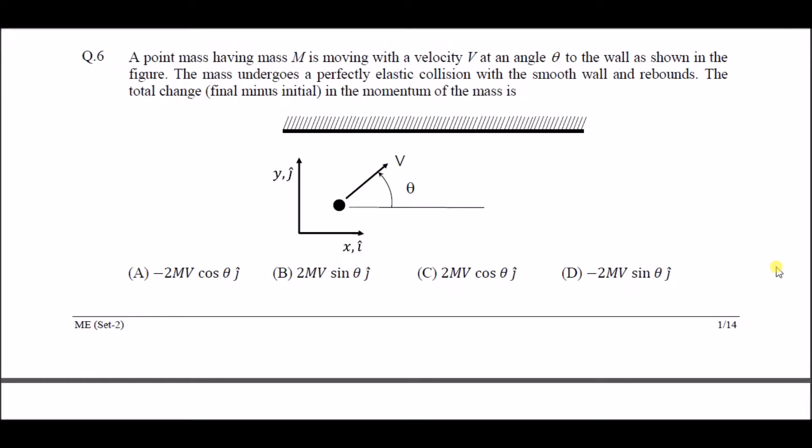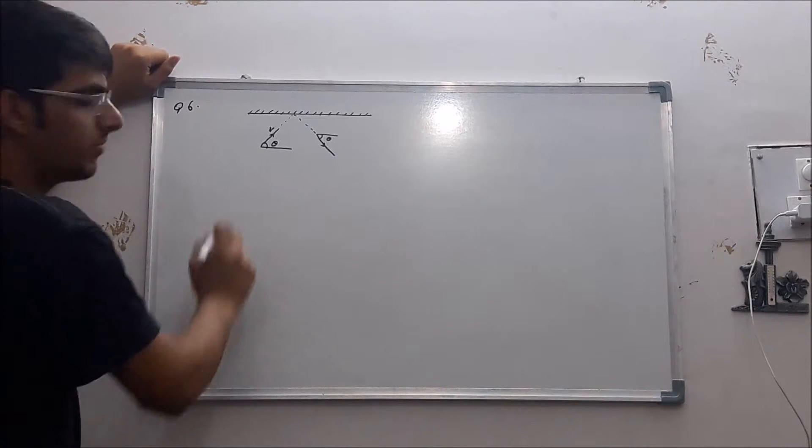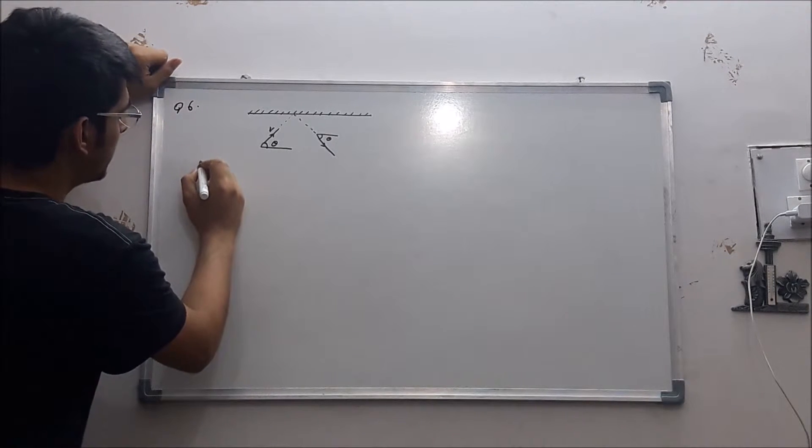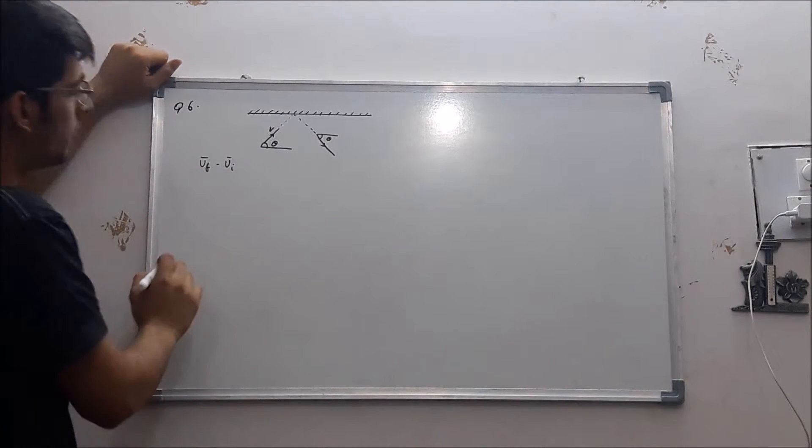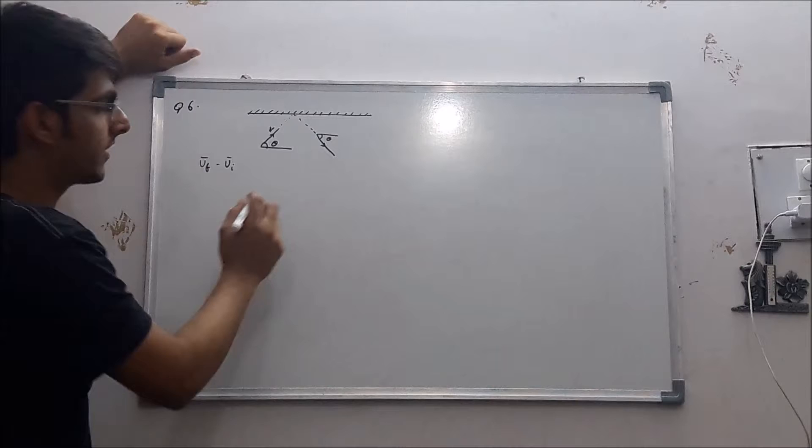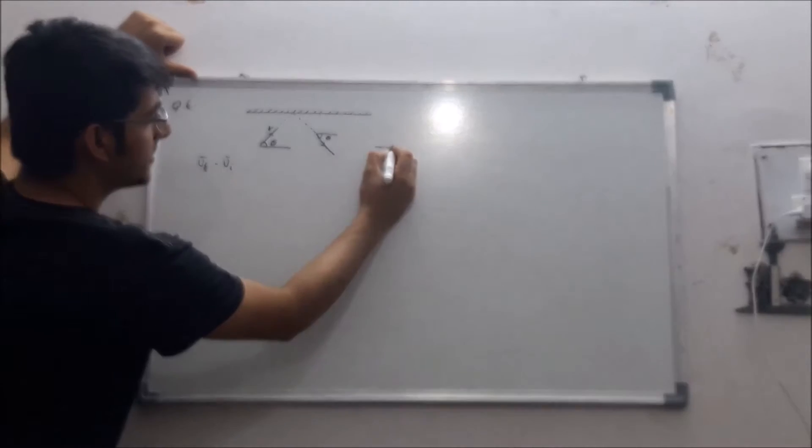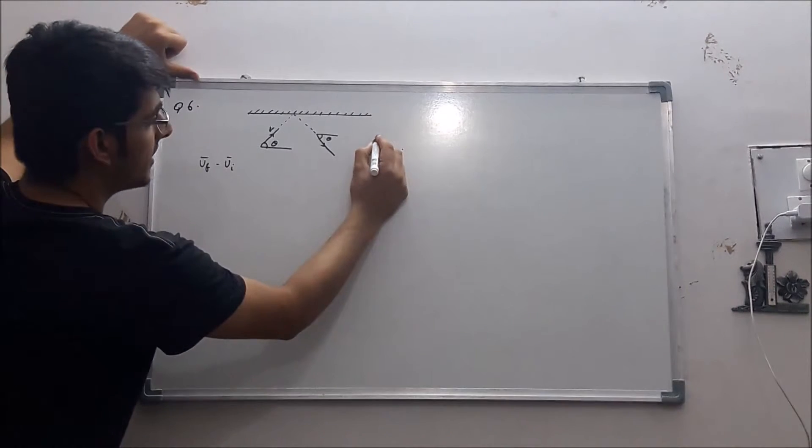The figure is given. So we want to find final velocity minus initial velocity. First, we will write the initial velocity in vector form. This is i direction and this is j direction.